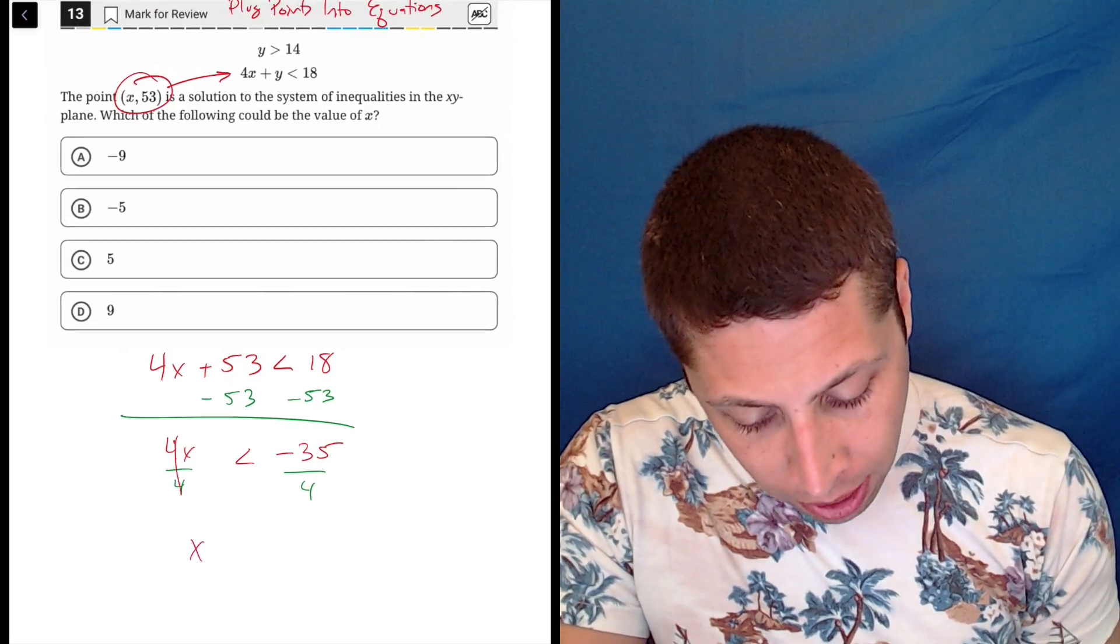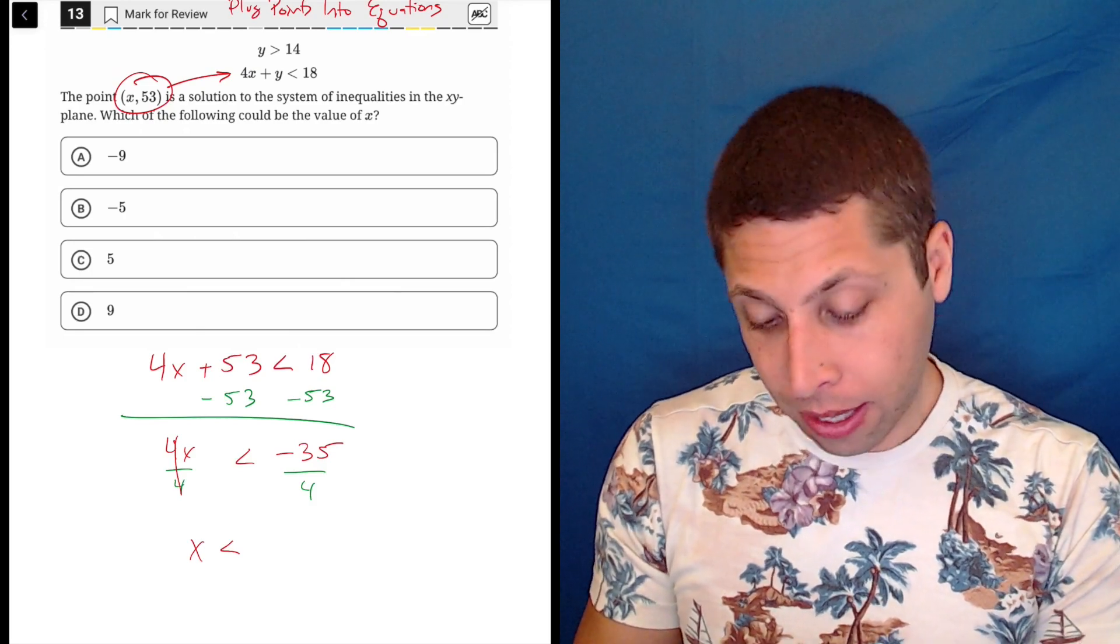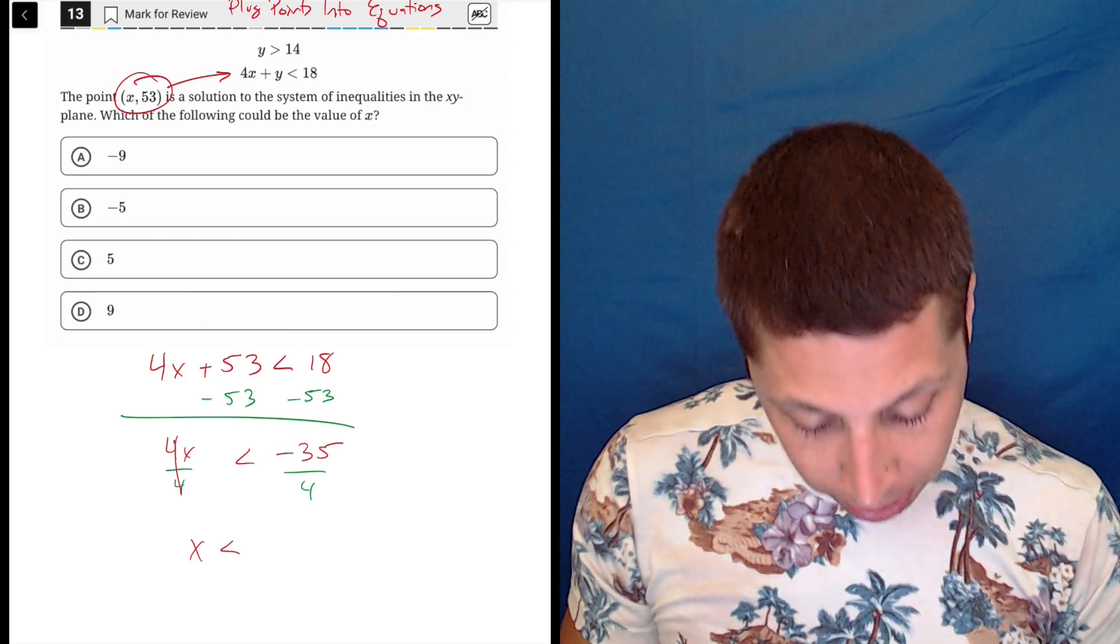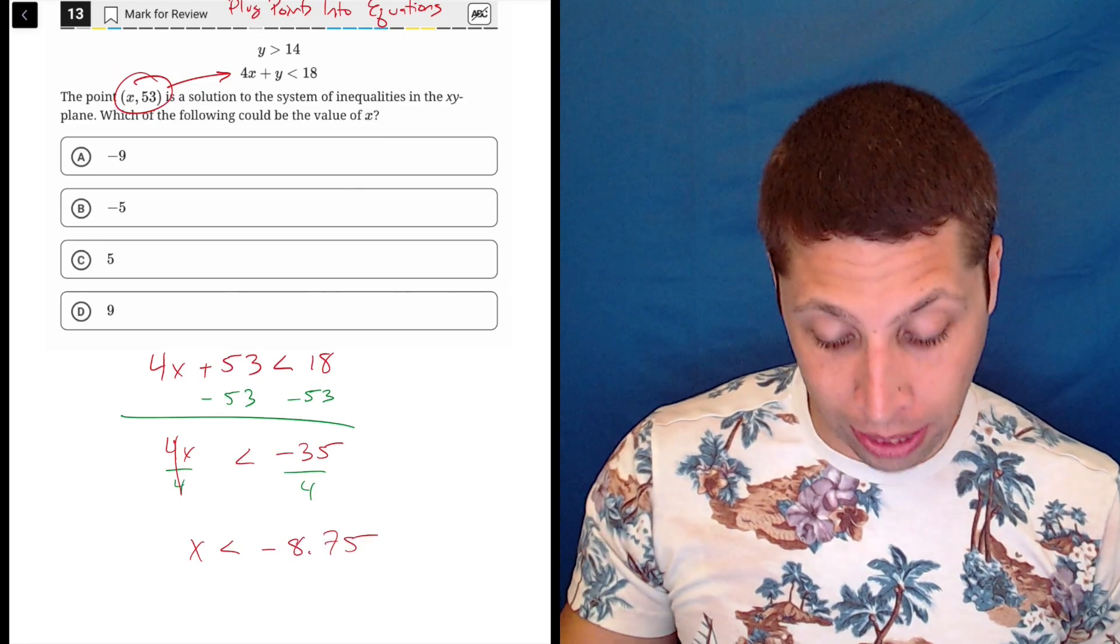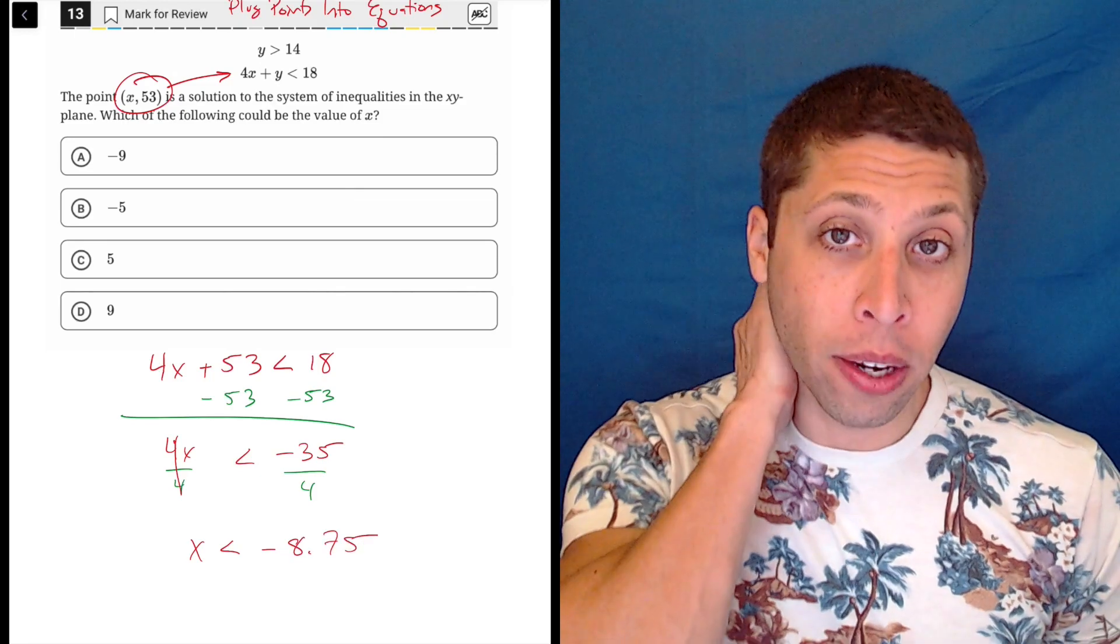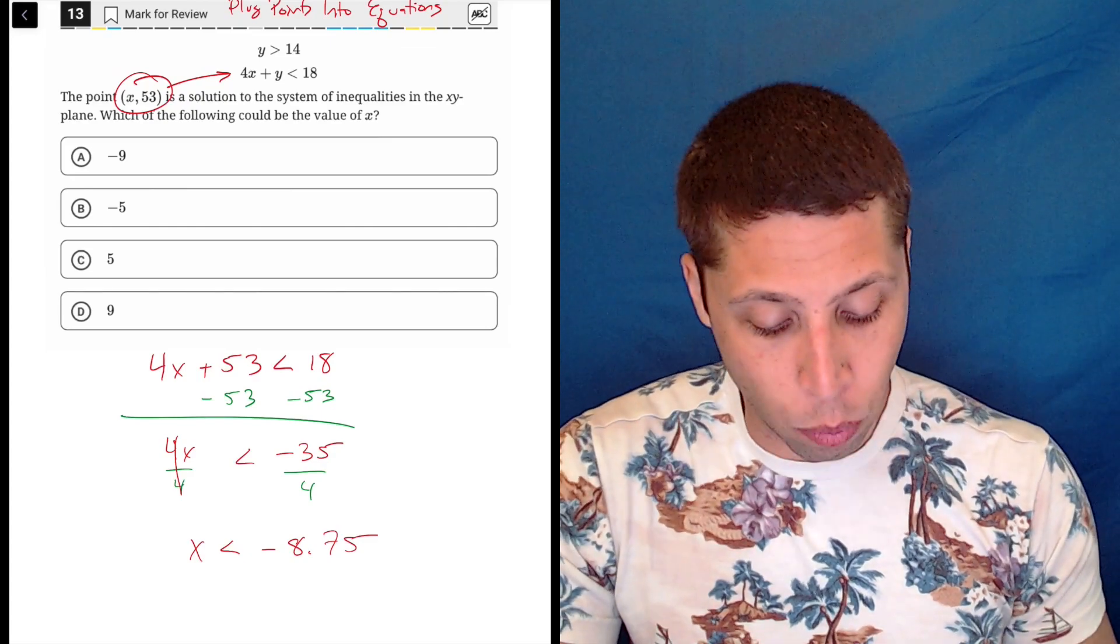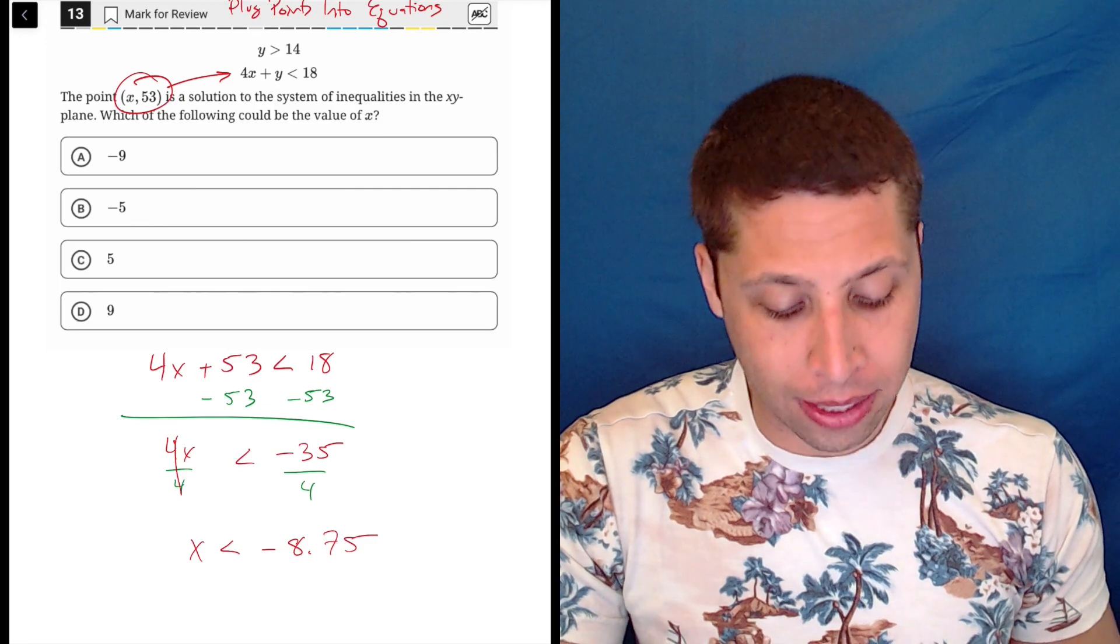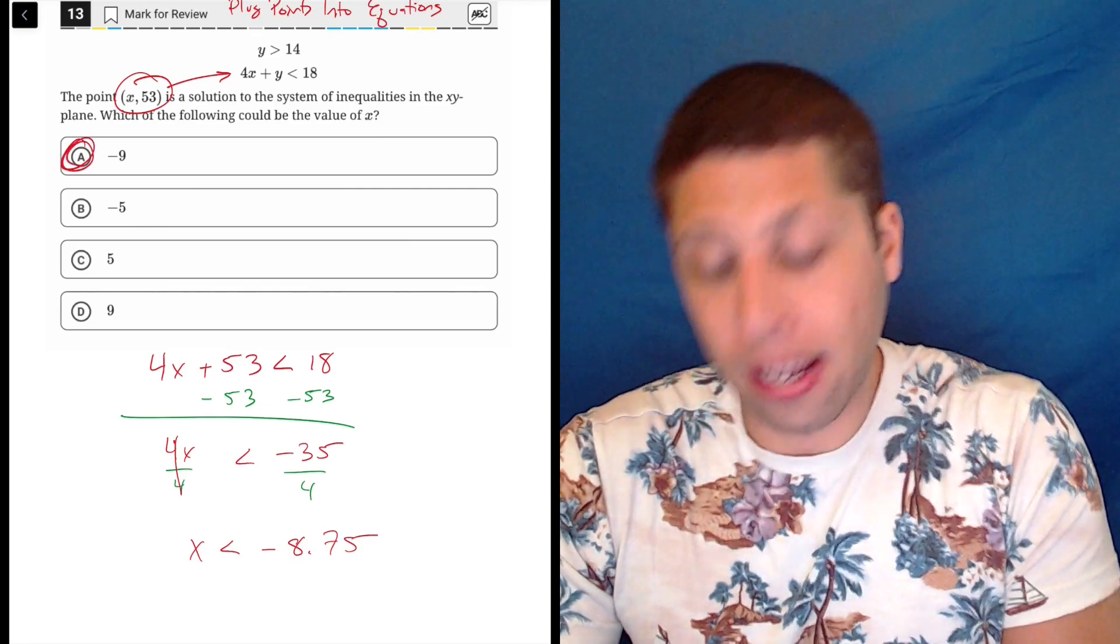So the 4s go away. x is less than. And then negative 35 divided by 4, it's not a nice number, but I'll put it here. Negative 8.75. This is where decimals are really helpful because now they want what number basically for x fits this inequality, which has a value where x is less than negative 8.75. And hopefully it's obvious that it is a.